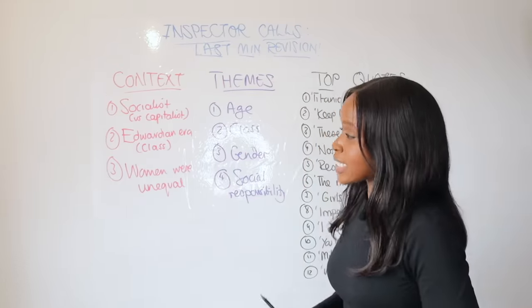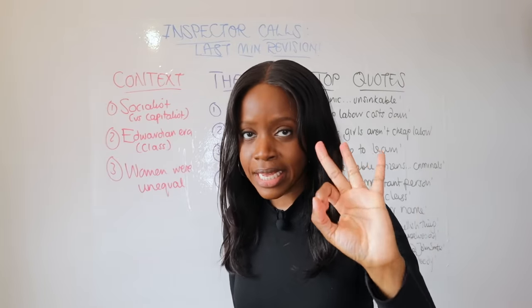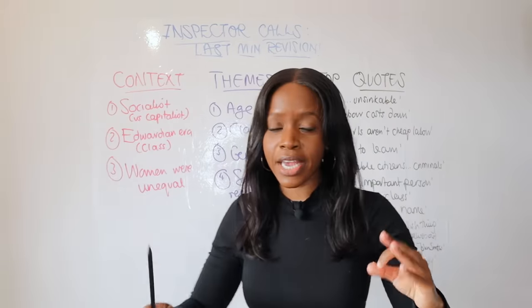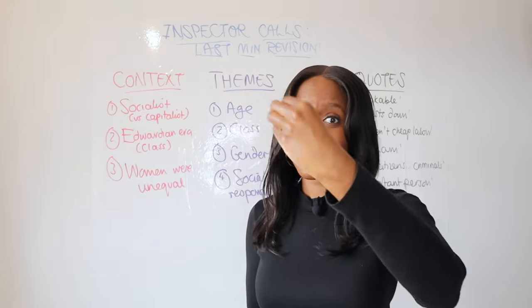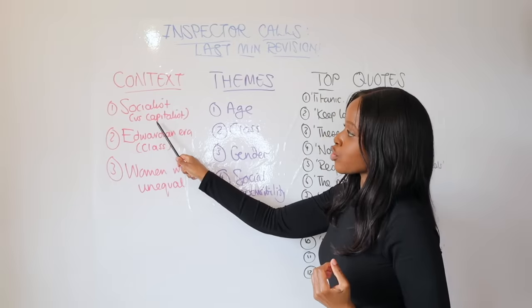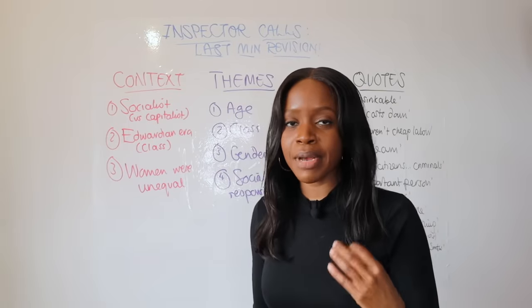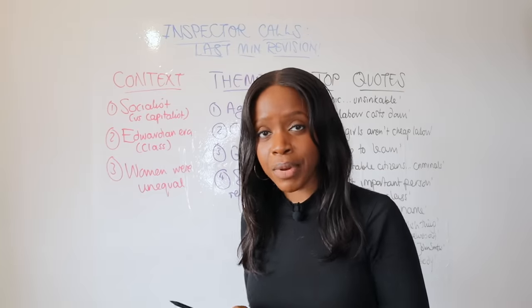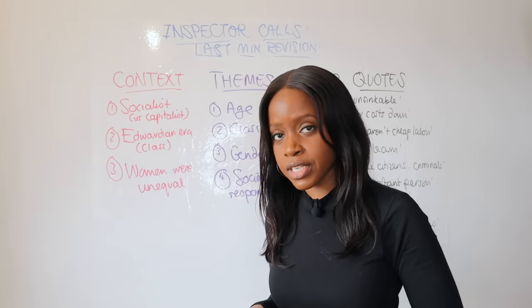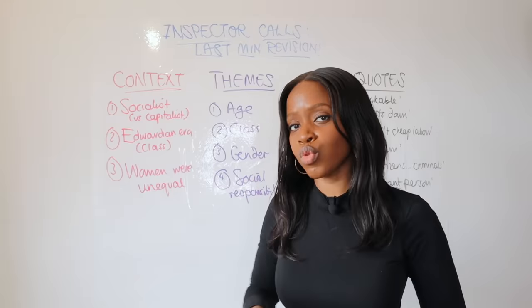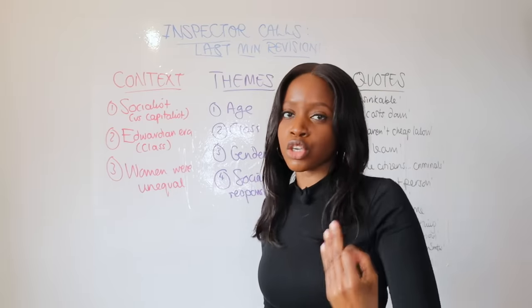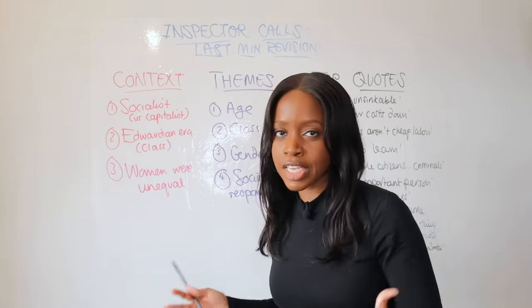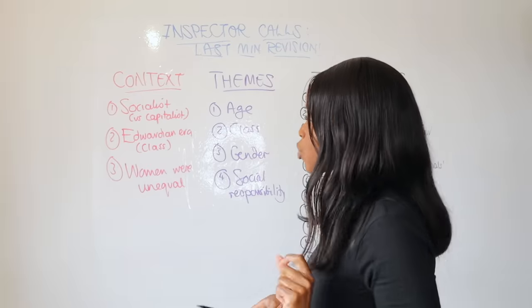Let's begin with context. If you forget everything else, make sure you commit these three context points to memory. The first: Priestley wrote this play as a socialist message because he himself was a socialist, and he wrote it to criticize capitalism as one of the major driving factors that made society unstable. He based the play just two years before the First World War, but when he wrote it, two world wars had already happened. One of his solutions was that if the UK moved towards a more socialist, equal state, things would be far more peaceful.